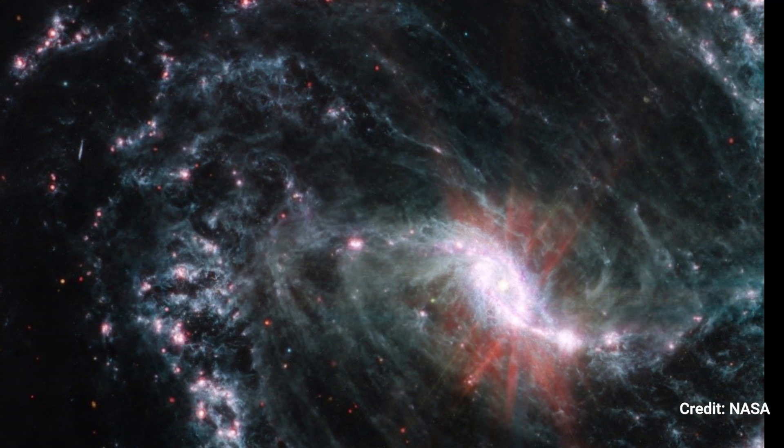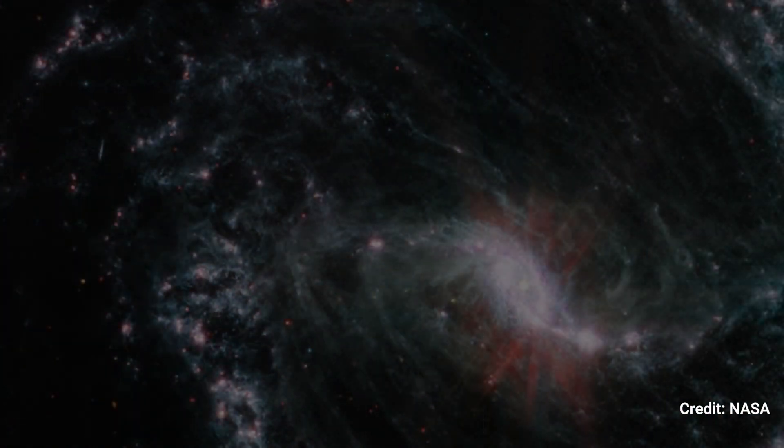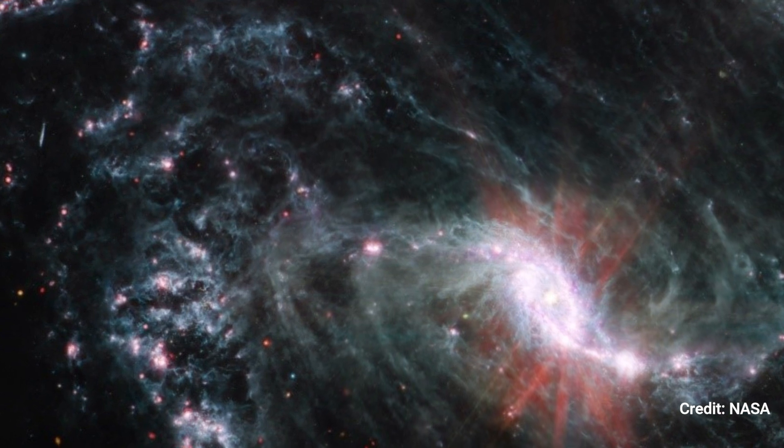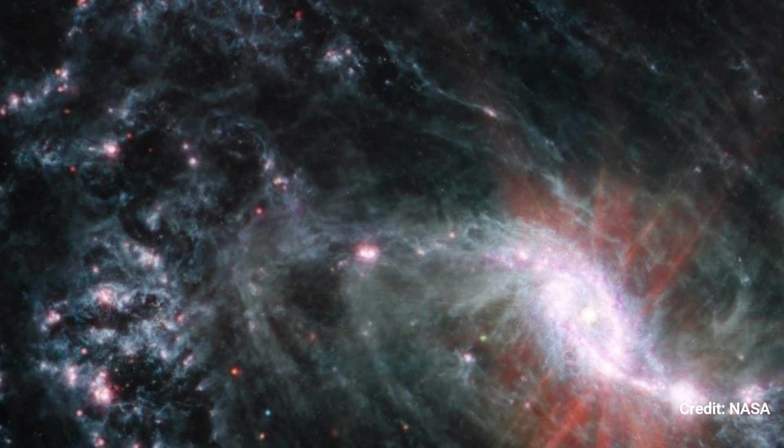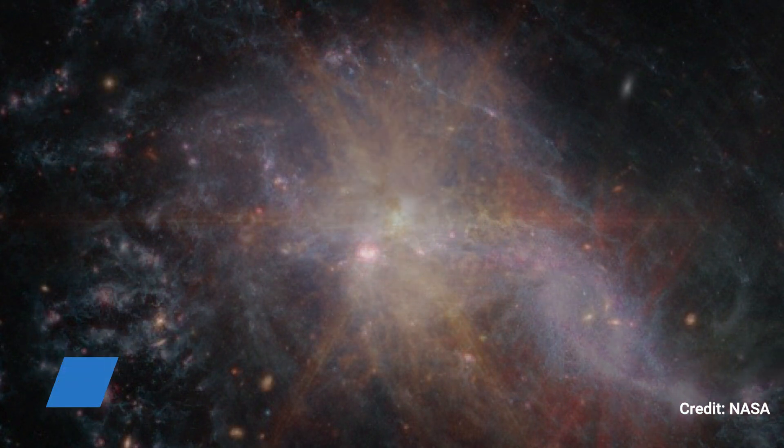NGC 1365 is a double-barred spiral galaxy located in the constellation Fornax around 56 million light-years distant from Earth. It is one of the largest galaxies known to astronomers, stretching twice the length of the Milky Way.